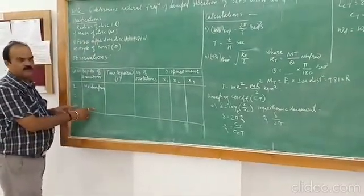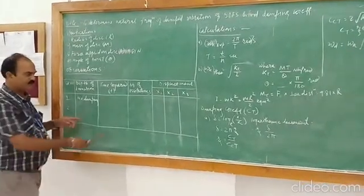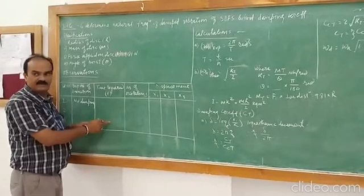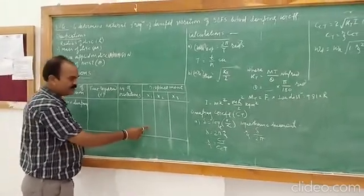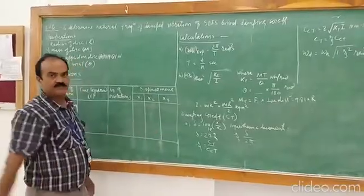Third one, for oil level of 2 cm or 2.5 cm, number of oscillations are 2 or 3. What is the time required? That we have to calculate. Then, the displacement we can take from the graph, x1, x2 and x3. Thank you.